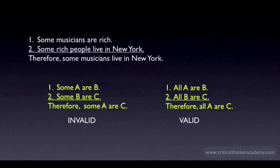For example, if I said: it's not the case that some tigers are not mammals, Tony is a tiger, therefore Tony is a mammal — that's actually a valid argument, but the form is too convoluted to be helpful as a memory aid.